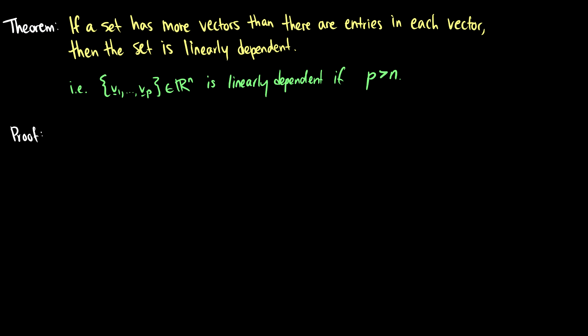Here's a theorem: if a set has more vectors than there are entries in each vector — that is, more vectors p than dimensions n — then the set is linearly dependent. For example, suppose we have three vectors (2,1), (1,2), (0,4) in two dimensions. That's three vectors for two dimensions, so one must be redundant, just like having i, j, and a third vector where the third was redundant.